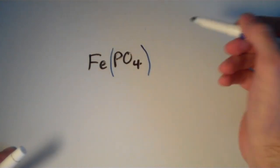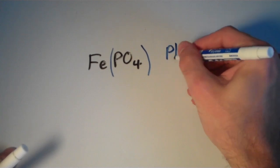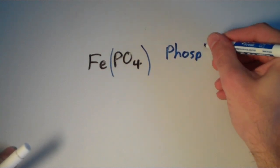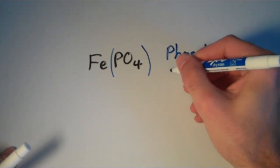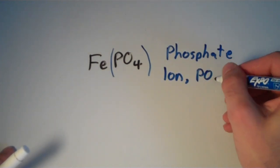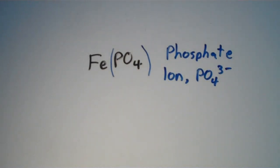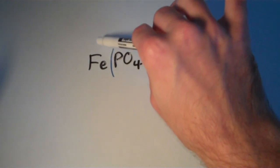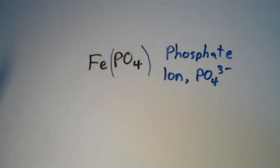And so let's start with our anion. Our anion is this guy right here. This is called the phosphate ion. And the formula for the phosphate ion is PO4 3-. Again, this is just one of those common polyatomic ions that is worth memorizing.